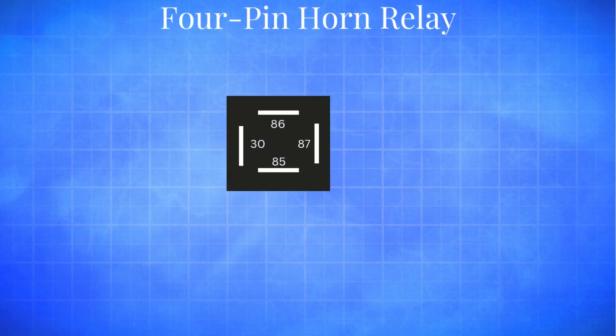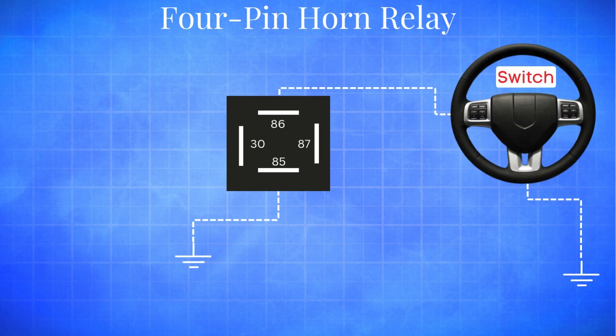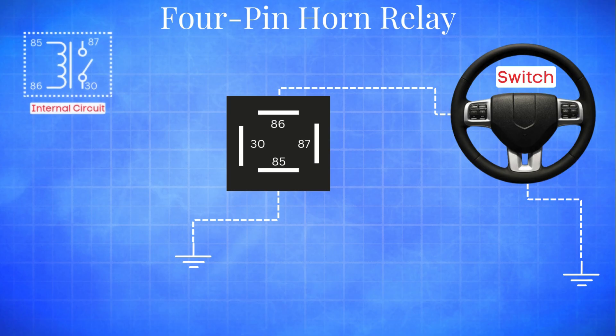Alright, now let's dive into the 4-pin horn relay. The 4-pin horn relay is one of the most commonly used types in vehicles. It typically has four terminals, labeled 30, 85, 86, and 87. Pin 85 connects to ground. Pin 86 goes to the horn switch. Together, pins 85 and 86 make up the coil circuit.